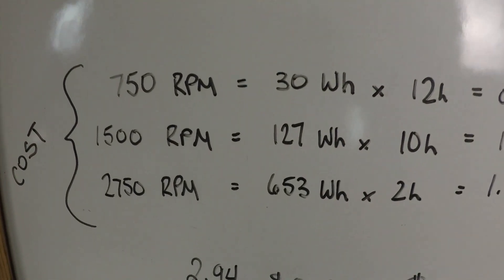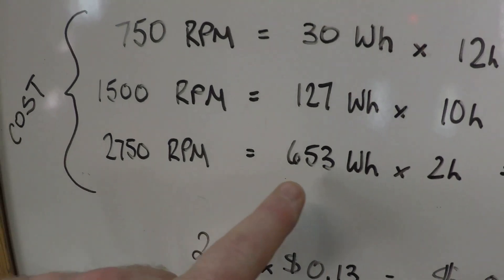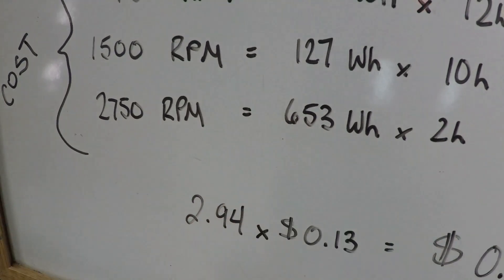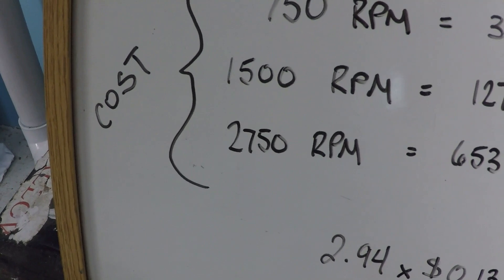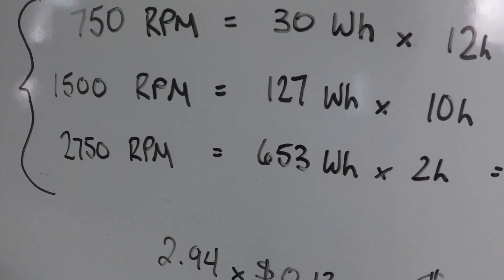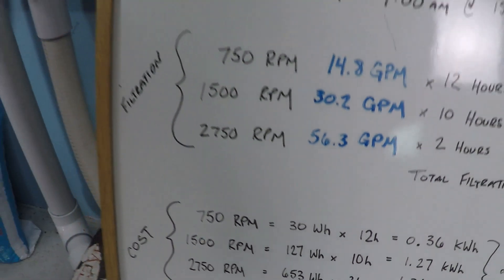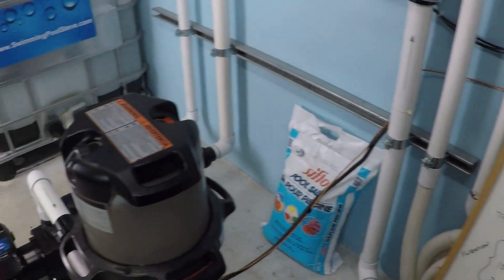Which, as you can see jumping ahead, is our next part of this calculation. Right here. So, when we're running at this high speed, we're using quite a bit of power. Quite a bit of power consumption per hour. Let's take a look at those other speeds again.